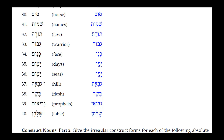Number thirty-five: Giva — feminine singular absolute for 'hill.' The Kamets He tells you it is feminine singular absolute. To make it construct: the He drops off, the Tav takes its place, the Kamets under the Yod reduces to a Patak. Result: Givat.